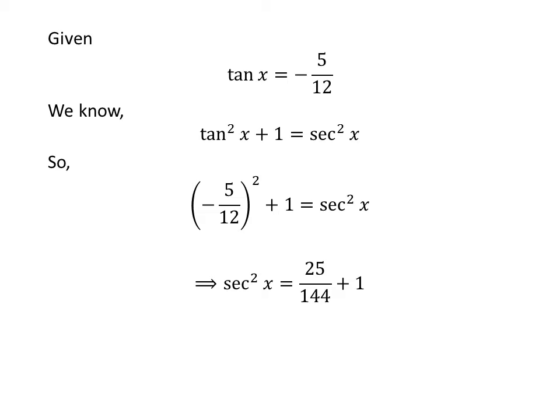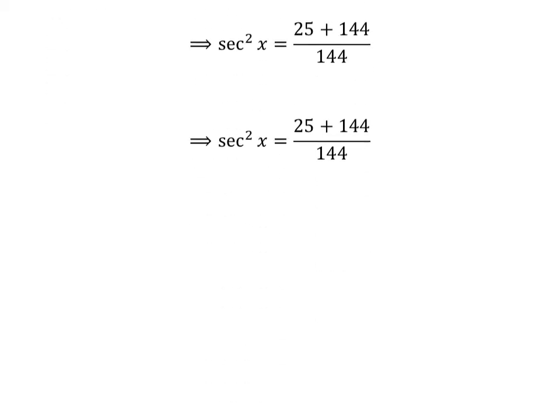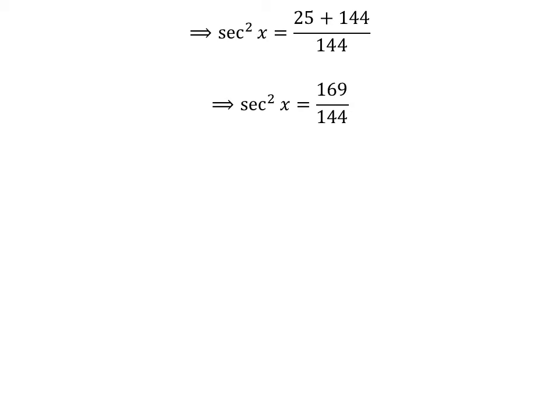We know square of 5 is 25, square of 12 is 144, and the square of a negative number is positive. So square of secant of x is equal to 25 upon 144 plus 1. Simple arithmetic gives us square of secant of x equal to 25 plus 144 upon 144, which further simplifies to 169 upon 144. Taking the square root of both sides gives us secant of x equal to plus or minus 13 upon 12.